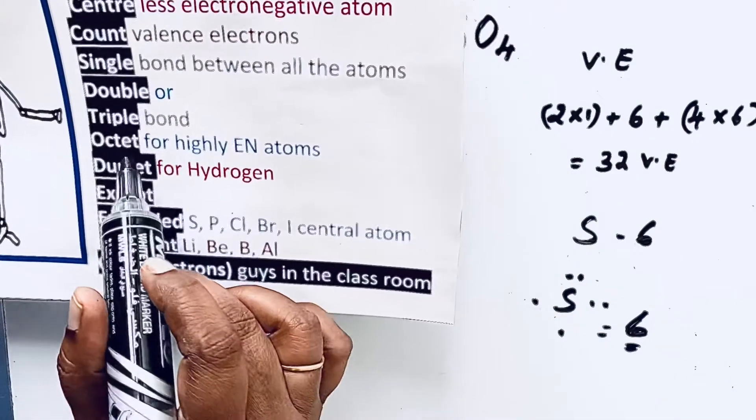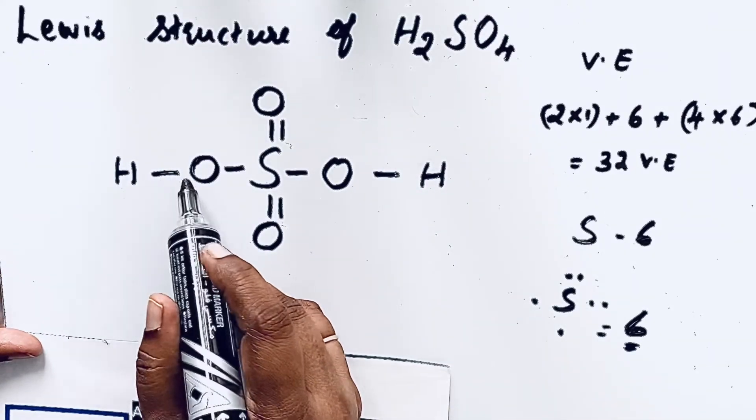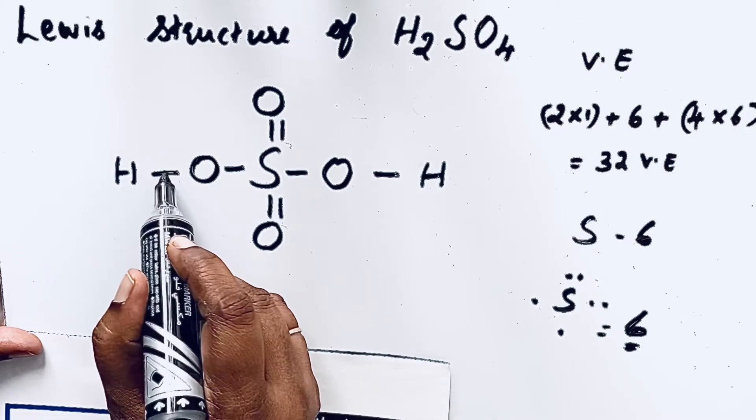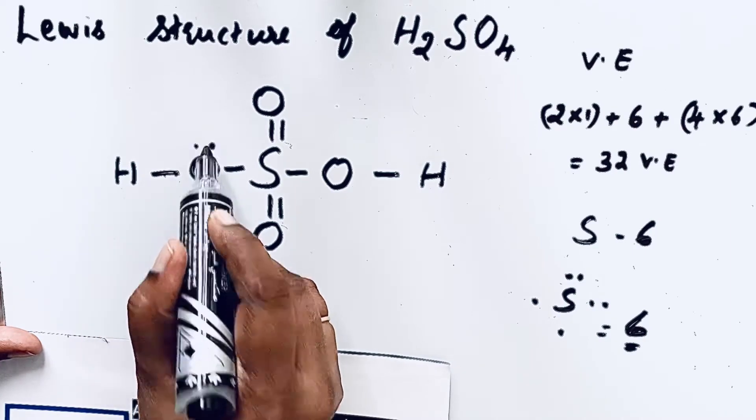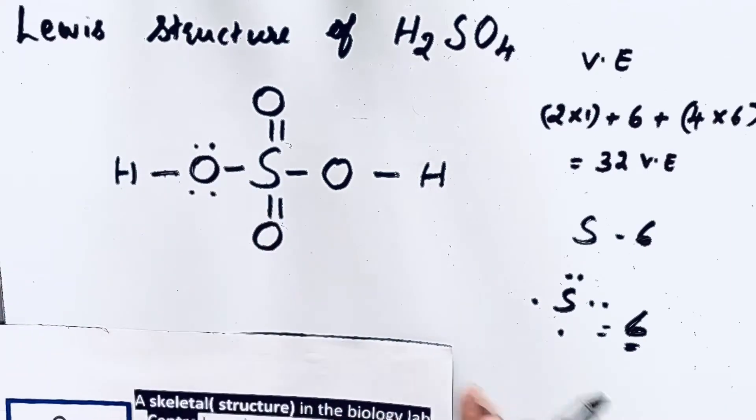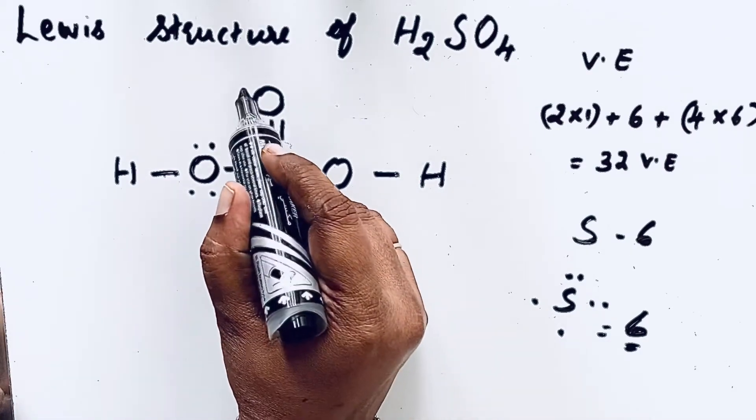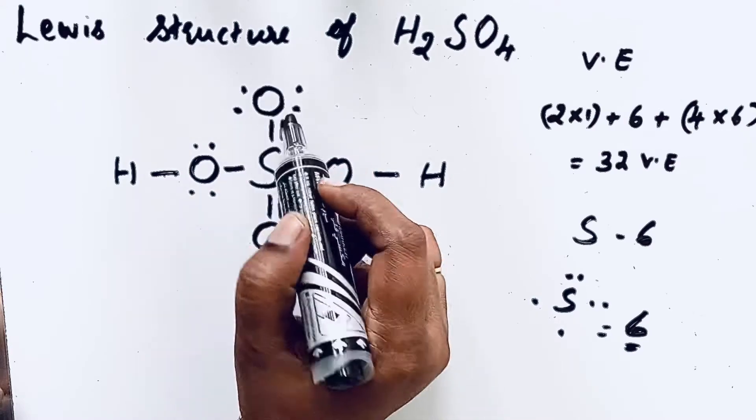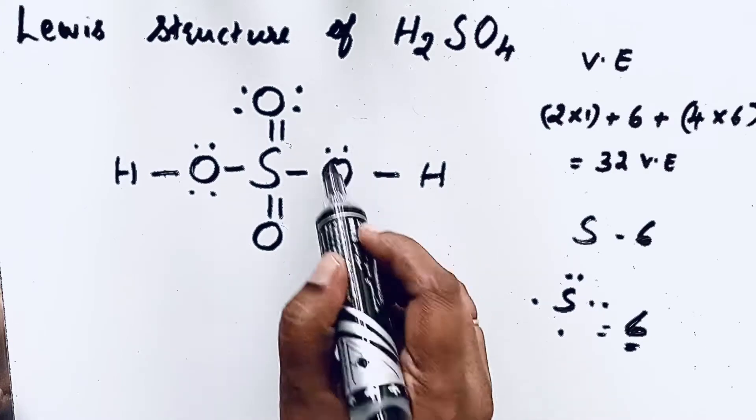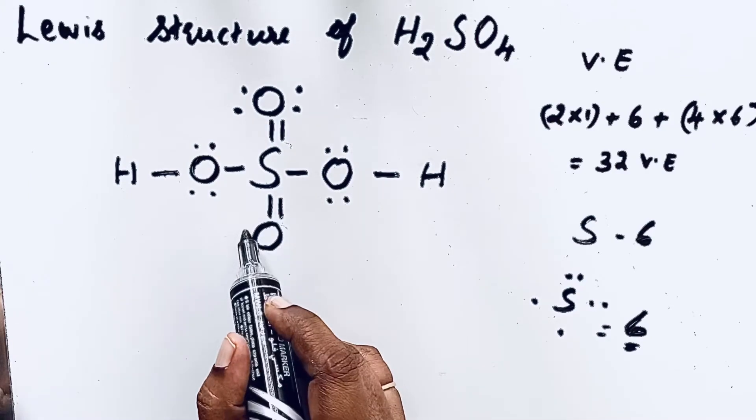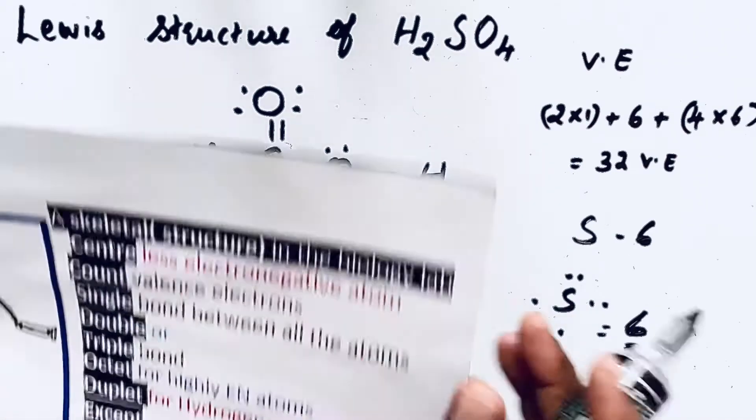Now come to the next one: octet for highly electronegative atom. Here oxygen is the highly electronegative atom, so let us make that octet configuration. This side also single bond, this side also single bond. So two plus two equals four, six, eight. So octet configuration for this oxygen is completed. Now we can come here, so two, four, six, eight. For this oxygen also completed. Two, four, six, eight. For this oxygen also completed. Now we can come here, two, four, six, eight. Octet configuration is completed for all the oxygen atoms.